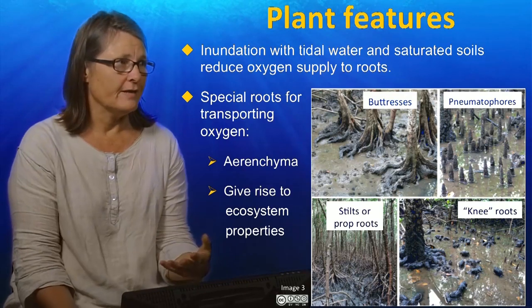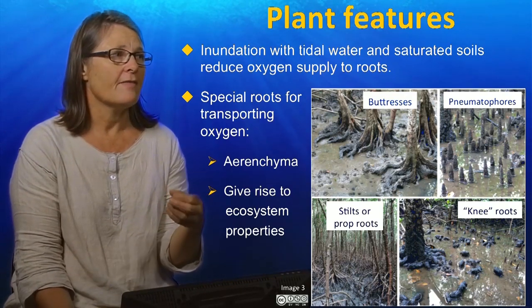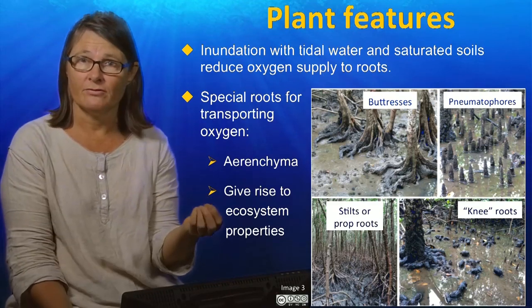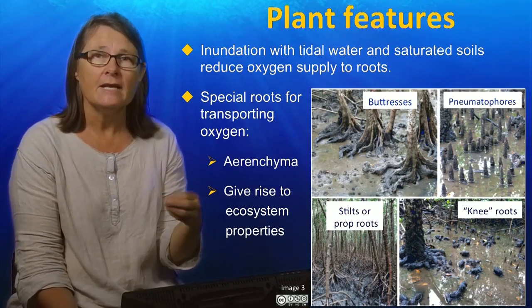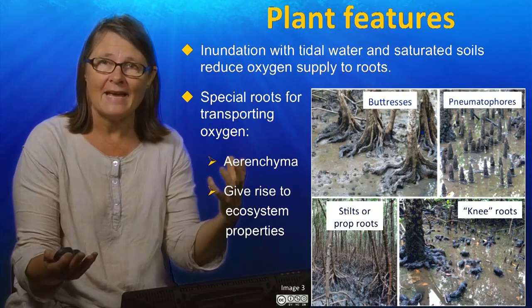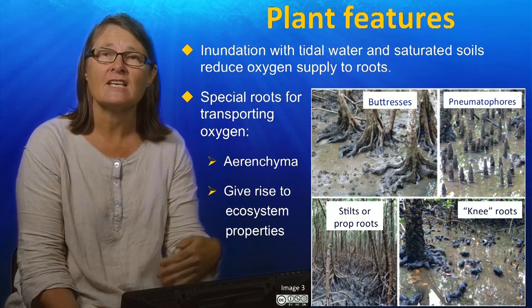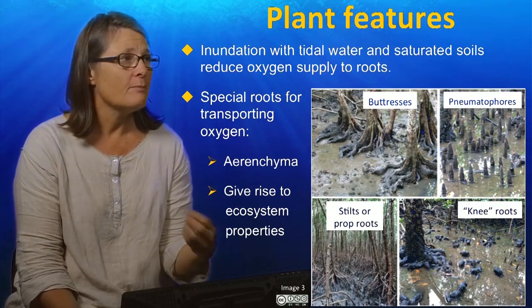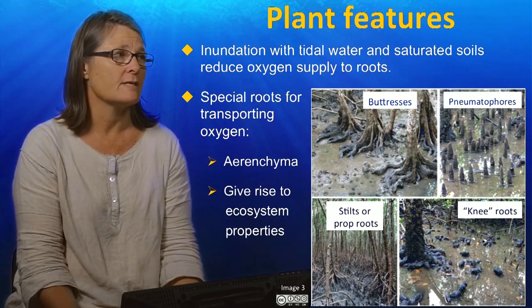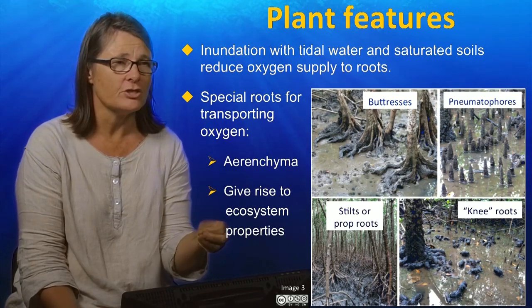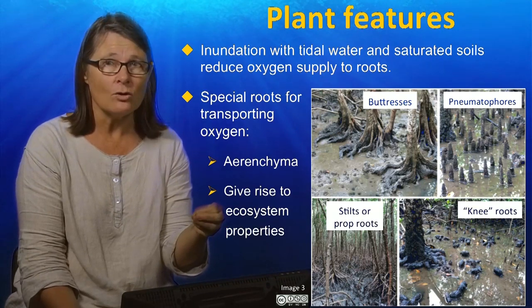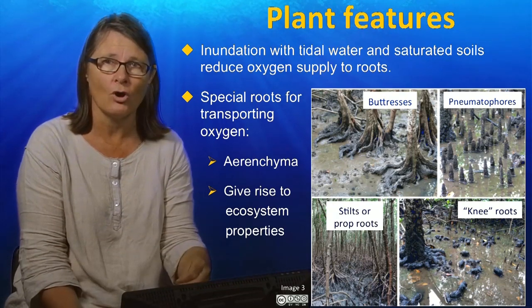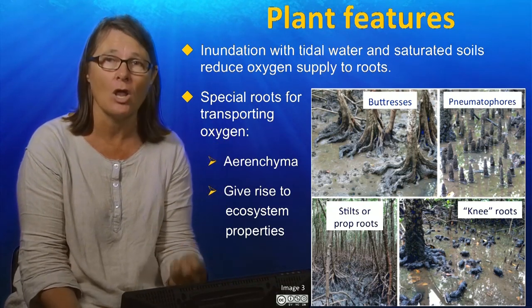One of the important features of mangrove trees is their root systems. Trees that are inundated by salt water or by tidal water, even if it is relatively fresh every day, need to move oxygen from the air down into their root systems so that they can continue their metabolic activity of taking up water and nutrients and growth. So in mangroves they have very special roots for transporting oxygen. These roots inside are spongy, filled with tissue or cells called aerenchyma, which has a lot of air spaces to allow the transport of oxygen from the air down into the soils that are low in oxygen.